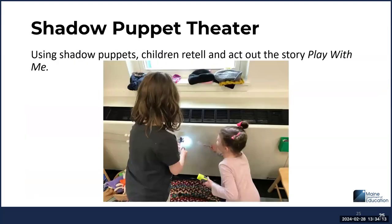Also in the library, you will do shadow puppet theater. Using shadow puppets, children will retell and act out the story Play With Me. Have discussions and ask questions about the story, and support children in deciding who will be the audience and who will be the puppeteers.